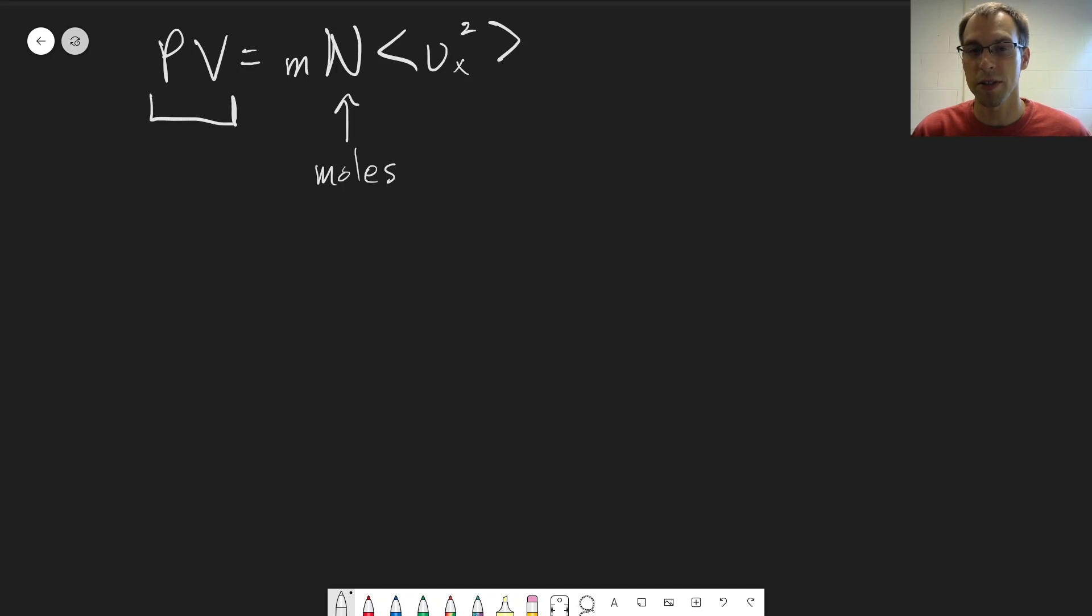Now there's nothing special about the x-direction, it's just the one we picked. So everything we've derived should also work for the y and z directions. So we call this isotropic velocity, meaning direction doesn't matter. That's the definition of this. Meaning that there's nothing special about any of the dimensions that we have.